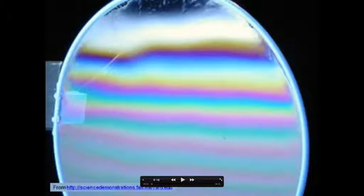Over time it sags and becomes thinner at the top and thicker at the bottom, and if you shine light on it, because of the different thicknesses of the film, you get this banding effect, which you should recognize as a consequence of some sort of interference.